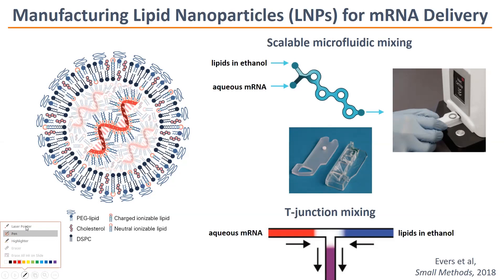The current model is shown here on the left, where the pegylated lipid is on the outside in contact with the aqueous phase. There's typically a bilayer structure thought to contain most of the helper lipid, the DSPC. Inside, you have the protonated ionizable lipid that's electrostatically bound to the negative phosphate backbone of the mRNA. There may be a few copies of mRNA — maybe one to five — versus several hundred copies of silencing RNA in a much smaller molecule. This central region is typically electron dense in a cryo-EM image and also contains the bulk of the cholesterol.